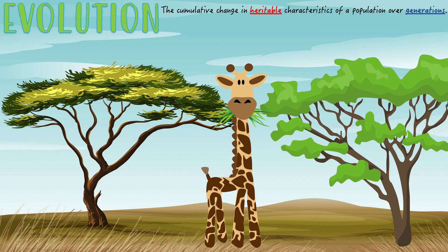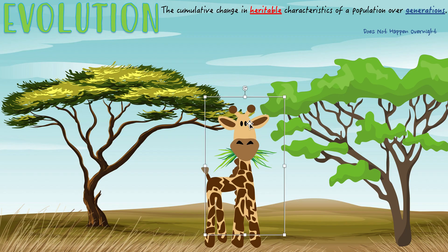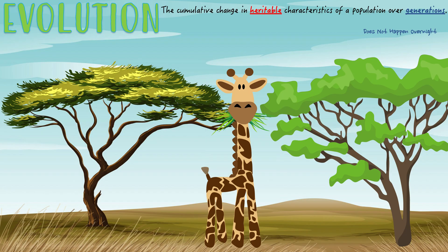There are many keywords in this definition I need to emphasize. First, generations — this process does not happen overnight; it happens over thousands or millions of years. For example, you don't have a giraffe one day with a short neck and then its kid has an extremely long neck. It's so gradual, so slow — it takes generations of passing on the dominant gene, and over time the neck gets longer and longer.